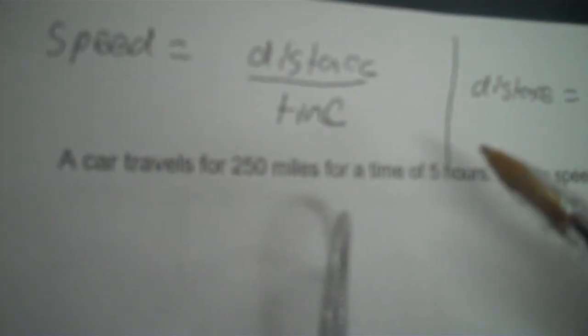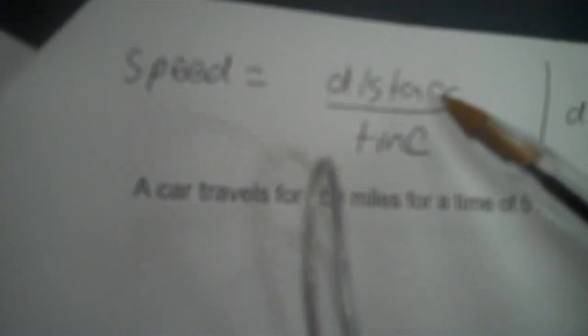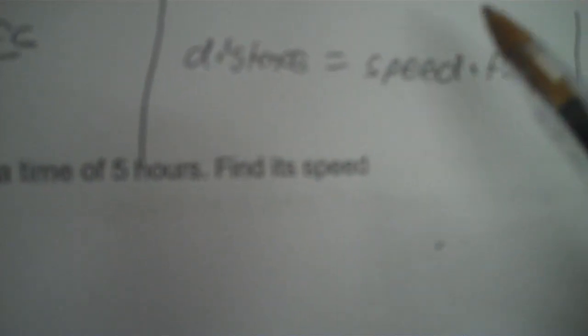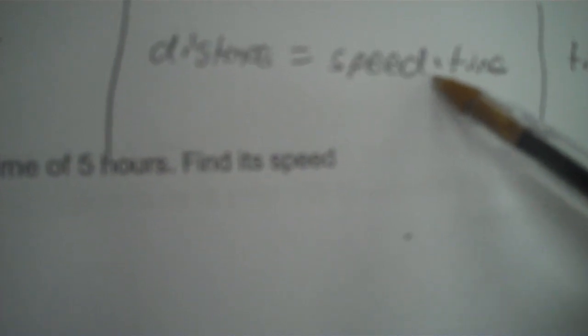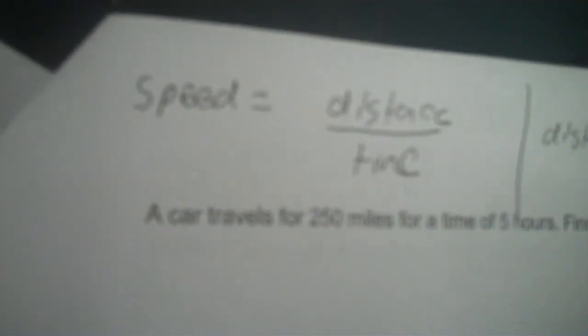Now this next part is pretty easy. I have three formulas. To find the speed of a car, you take the distance divided by the time. To find the distance a car travels — how many miles total — you take the speed multiplied by the time. To find the time a car travels, distance divided by speed.